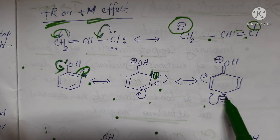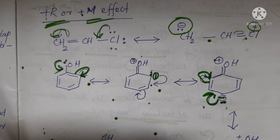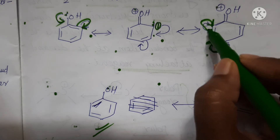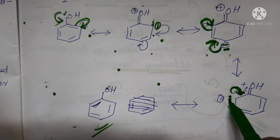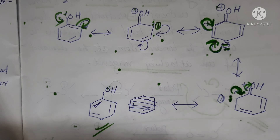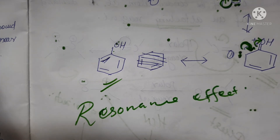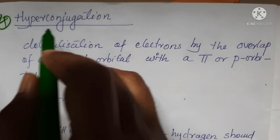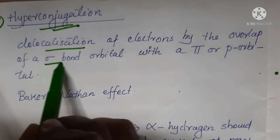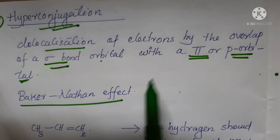Regarding the resonance effect and the double bond delocalization — next is the hyperconjugation effect. Hyperconjugation is the delocalization of electrons by the overlap of a sigma bond orbital with a pi or p orbital, also called the Baker-Nathan effect.